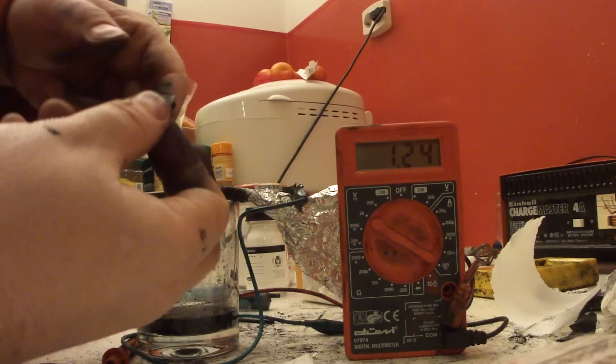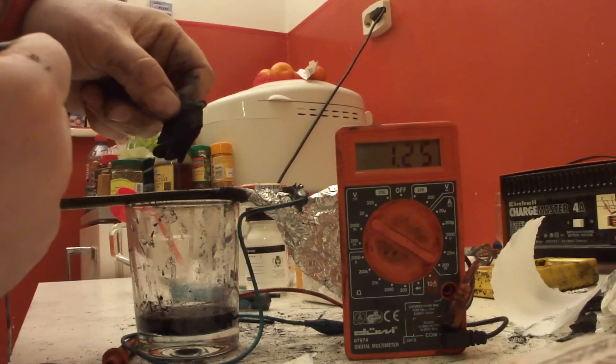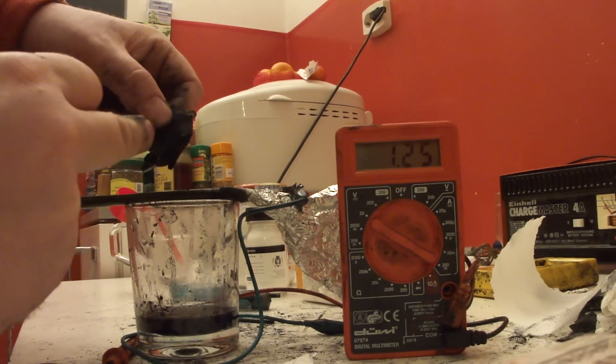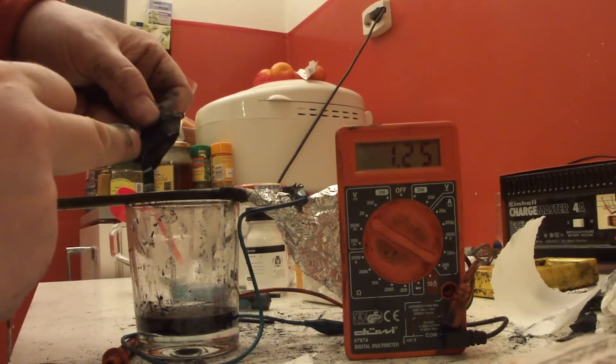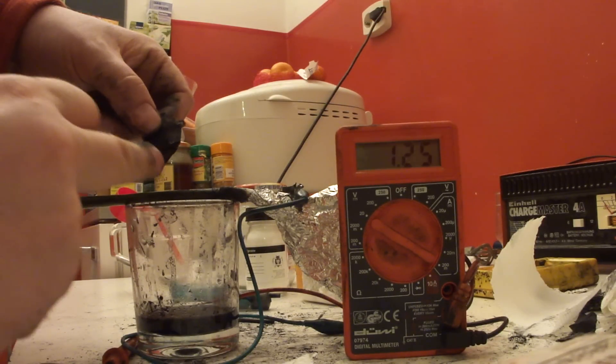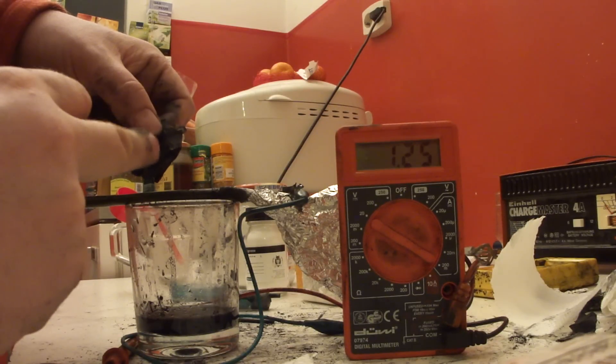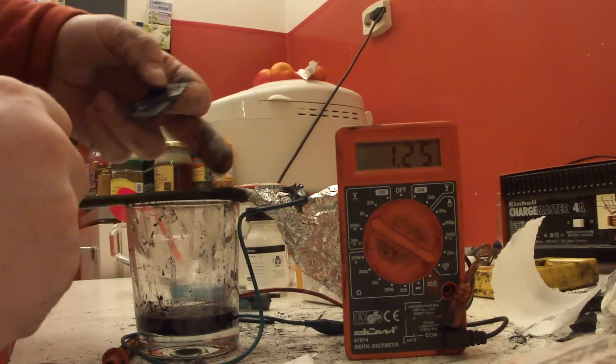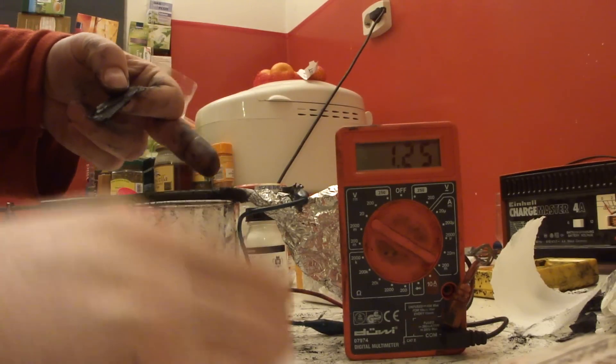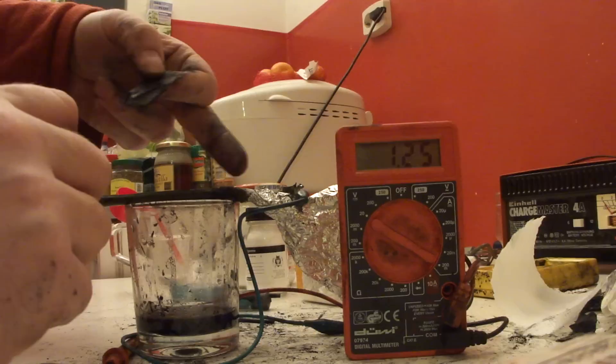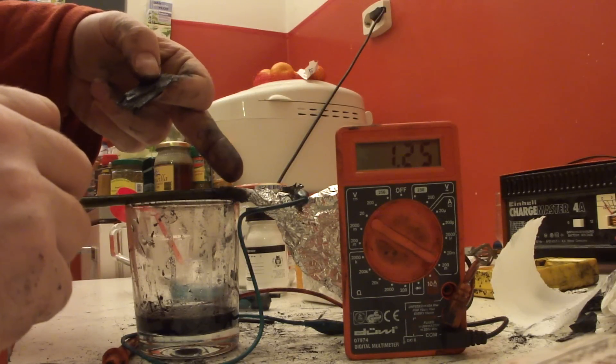It depends really on the graphite you are using, the lamp black. This was probably also done. Maybe it depends also a little bit on the surface area. I have here a little paper towel, also kitchen paper. Here, the aluminum foil around, wrapped to isolate a little bit.